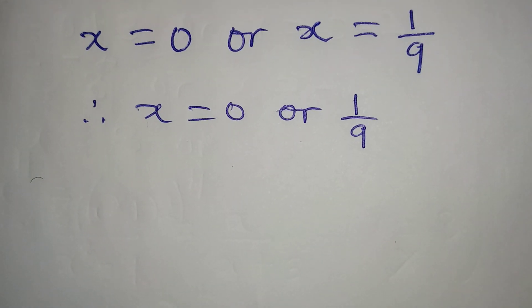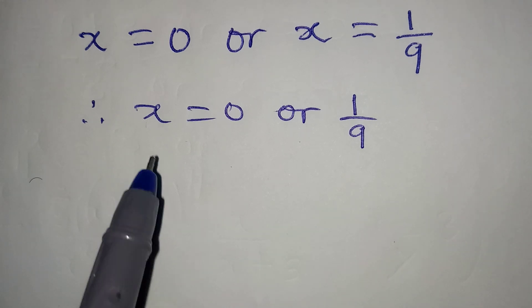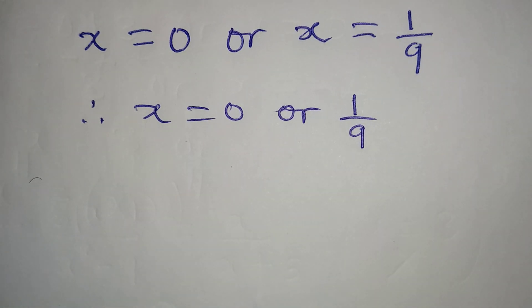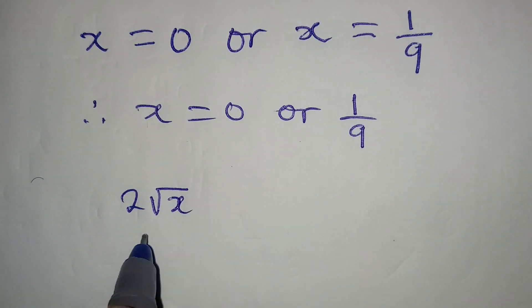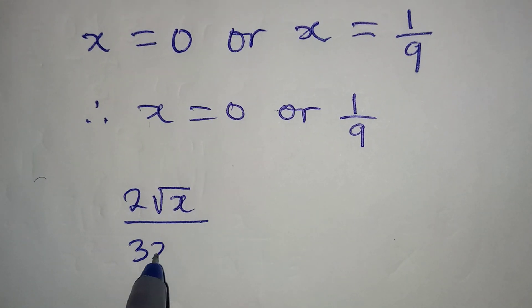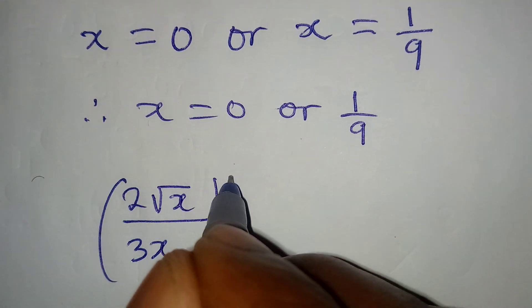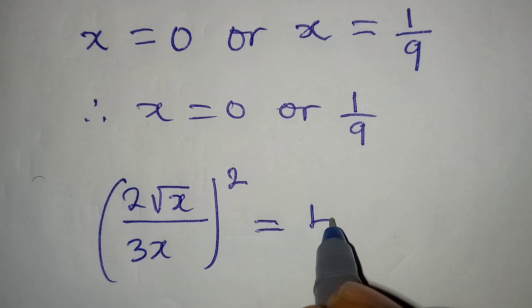But I would like to put this back into the equation to see if these two values of x will satisfy the equation (2√x / 3x)² = 4.